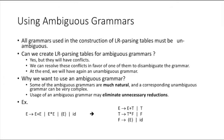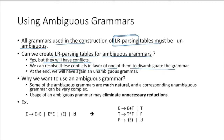What about using ambiguous grammars? All grammars used in the construction of an ALR parsing table must be unambiguous. Can we create an ALR parsing table for an ambiguous grammar? Yes, but they will have conflicts. One reason behind conflicts is ambiguity. We can resolve these conflicts in favor of one alternative to disambiguate the grammar, and after removing ambiguity the grammar will again be unambiguous.